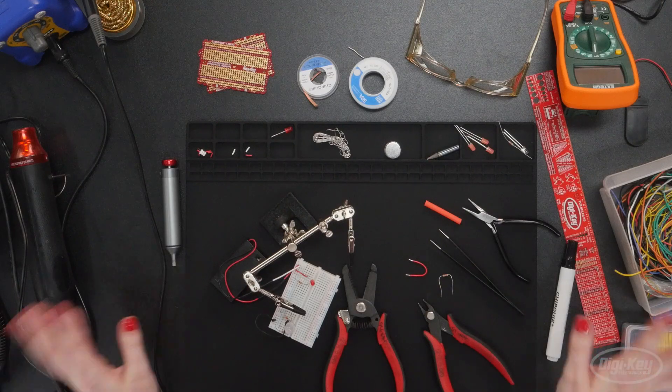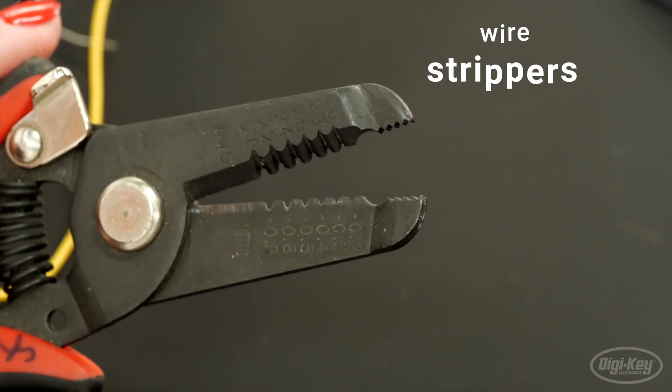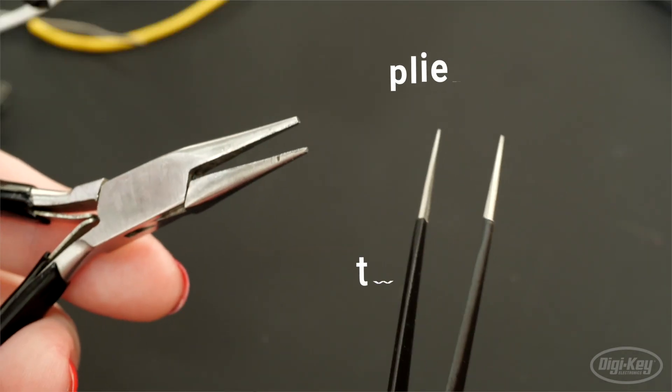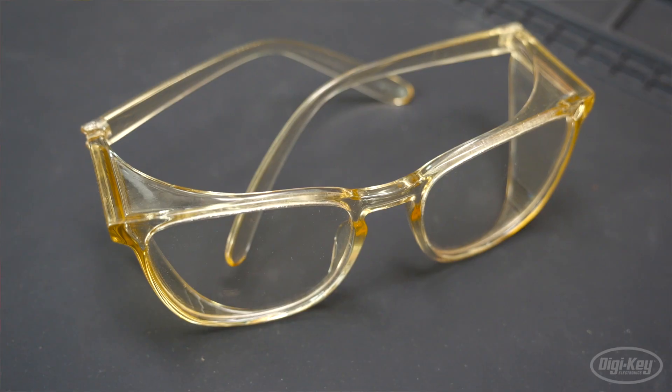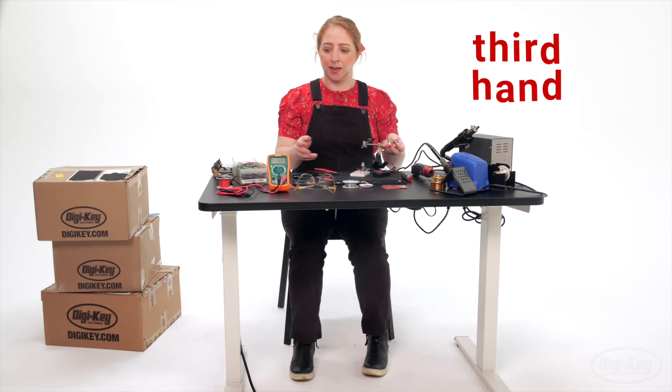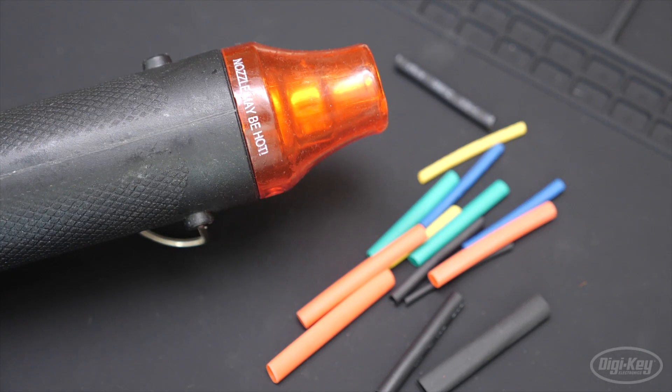These are the tools you'll need. A soldering iron and solder, wire strippers, flush cutters, pliers or tweezers, eye protection, some kind of work holding tool often called a third hand, a multimeter, some heat shrink tubing, and a heat gun or a lighter in a pinch.